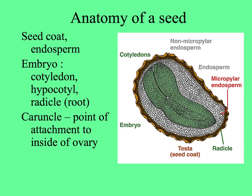So I realize we haven't yet looked at the anatomy of a seed. Most seeds have a seed coat on the outside, known as the testa, the outer layer that encloses the embryo and endosperm. The endosperm is nutritive tissue, and the embryo,